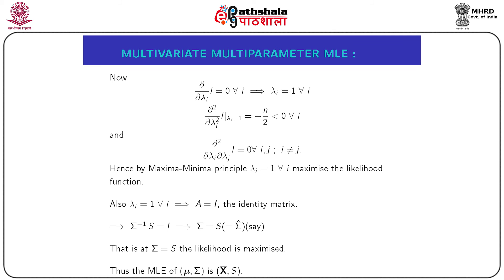That is, at Σ = S the likelihood is maximized. Thus, combining all these results, for the multivariate normal distribution N(μ, Σ), the maximum likelihood estimator of (μ, Σ) is the sample mean vector x̄ and the sample variance-covariance matrix S.